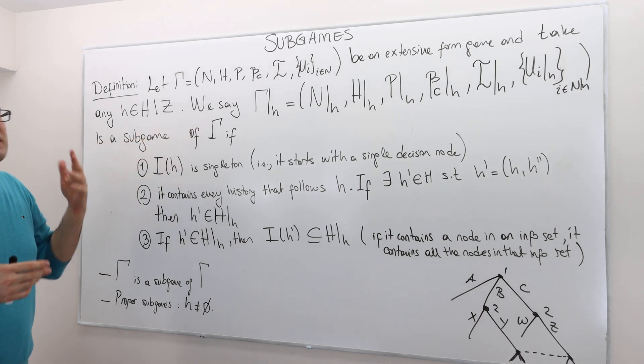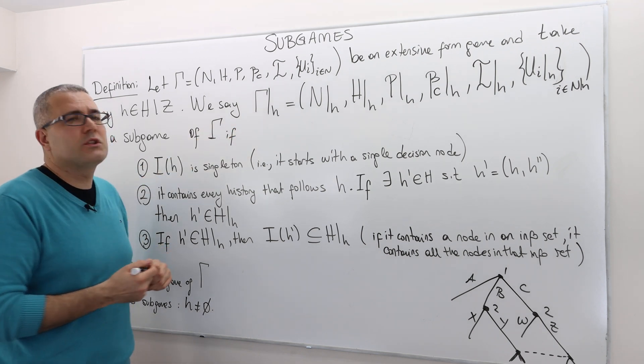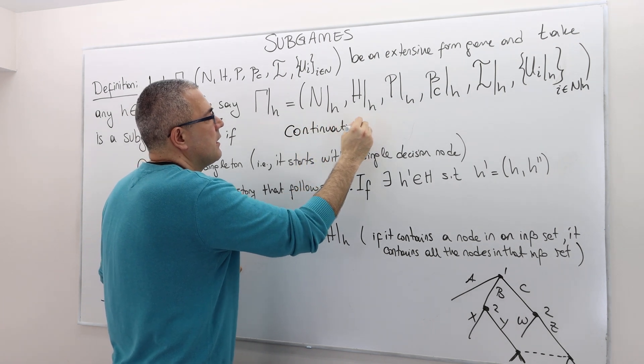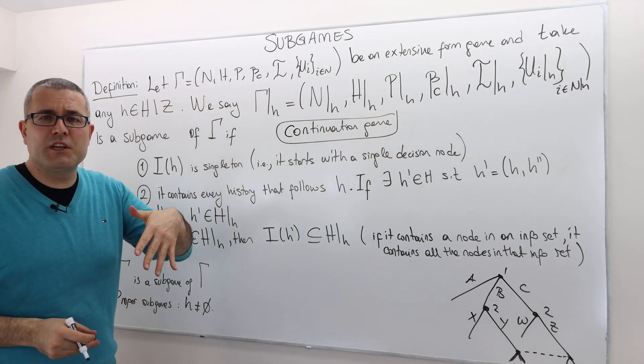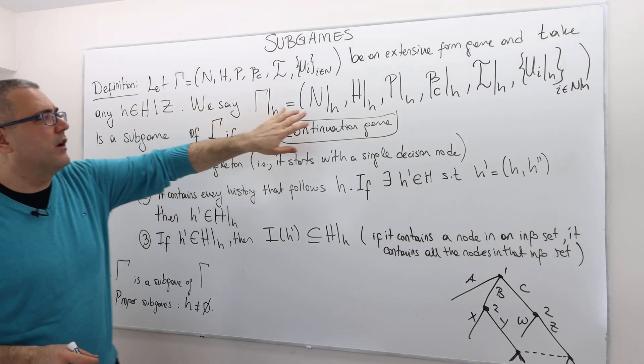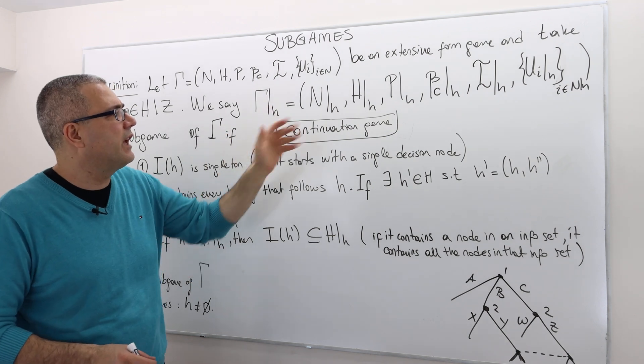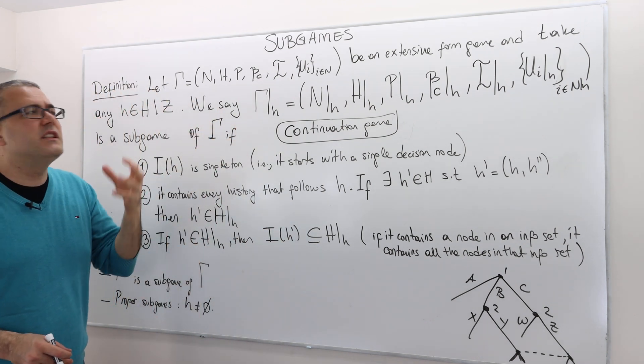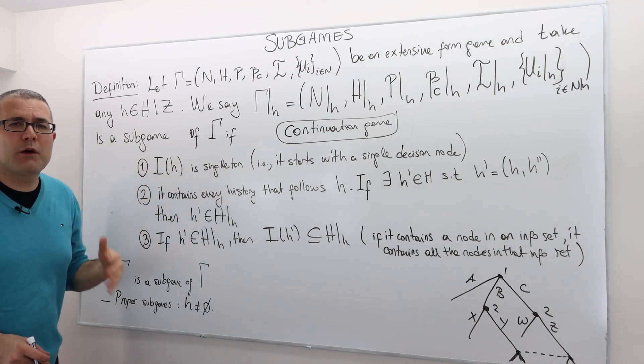If it is a terminal history, there is no continuation. Basically, we are defining what's called continuation game. And continuation strategies, continuation payoffs. We will later use this a lot. We say this game, and the set of players are restricted or became consistent with history H. Same for the histories, player functions, everything. We are going to call this continuation game or a subgame of the game itself if the following three properties hold.